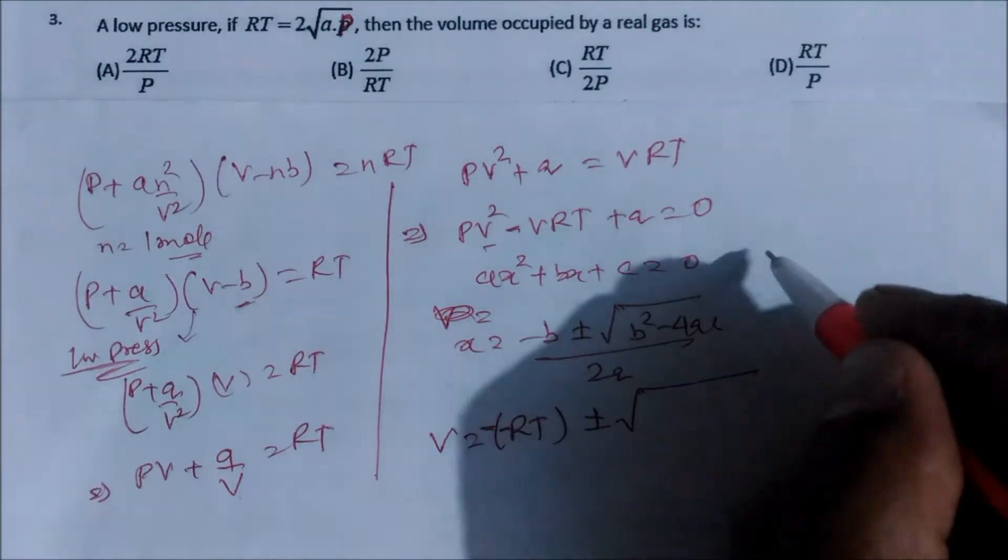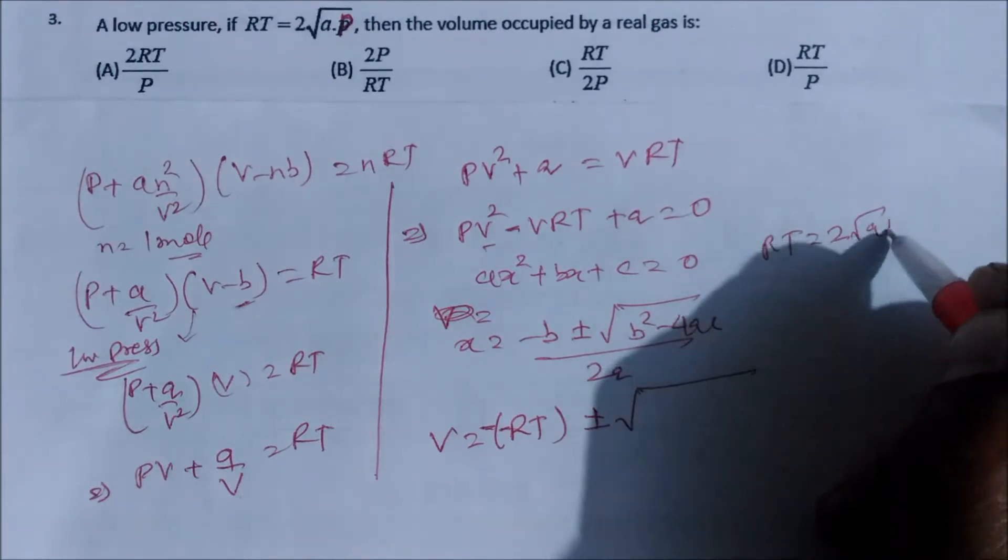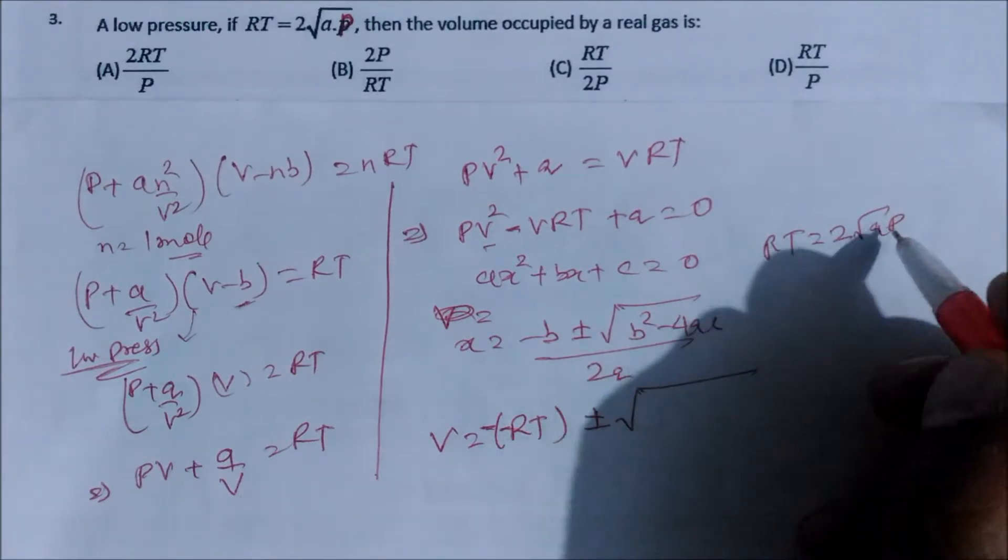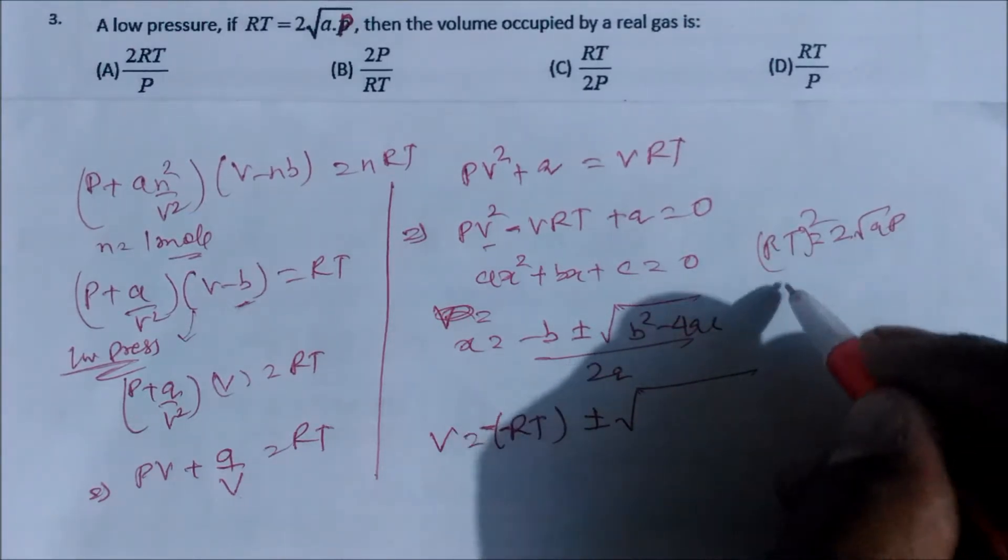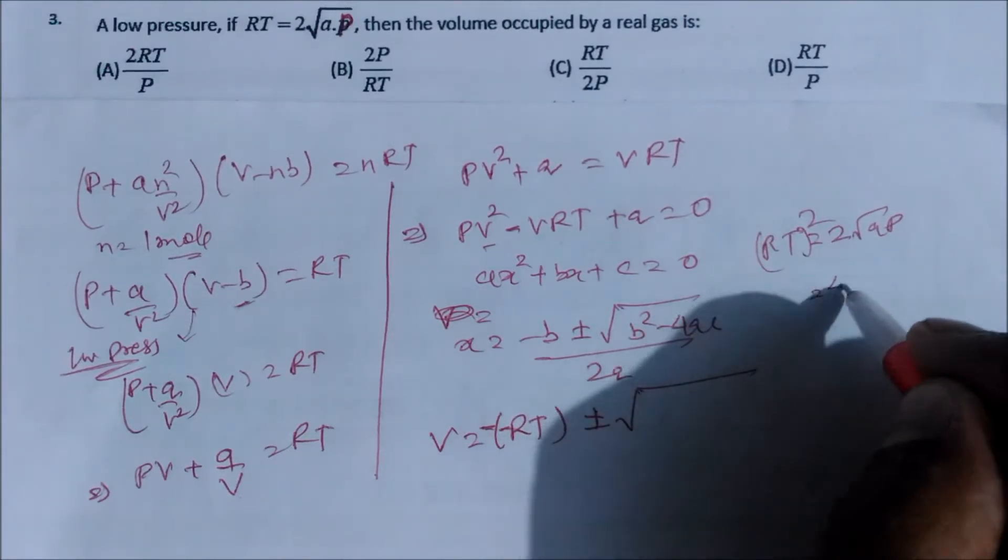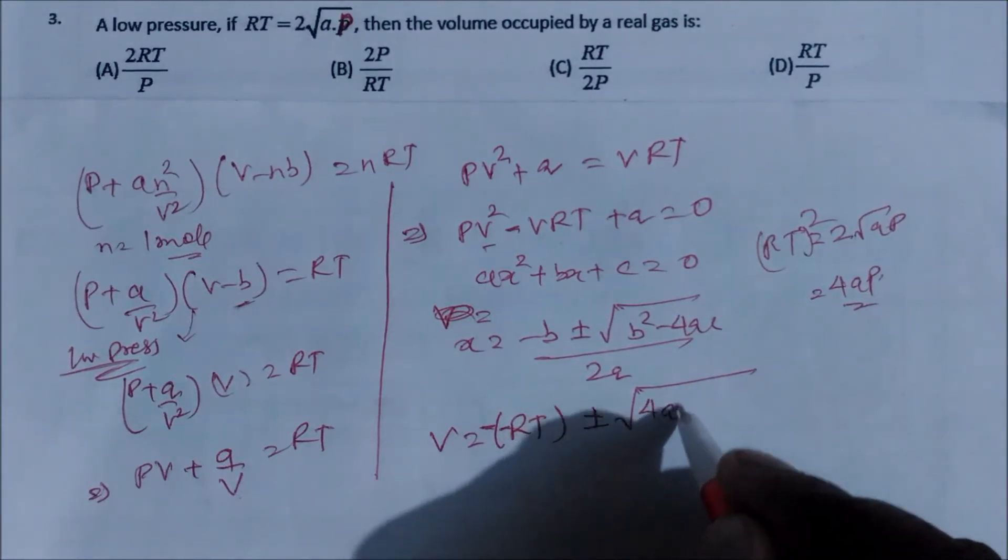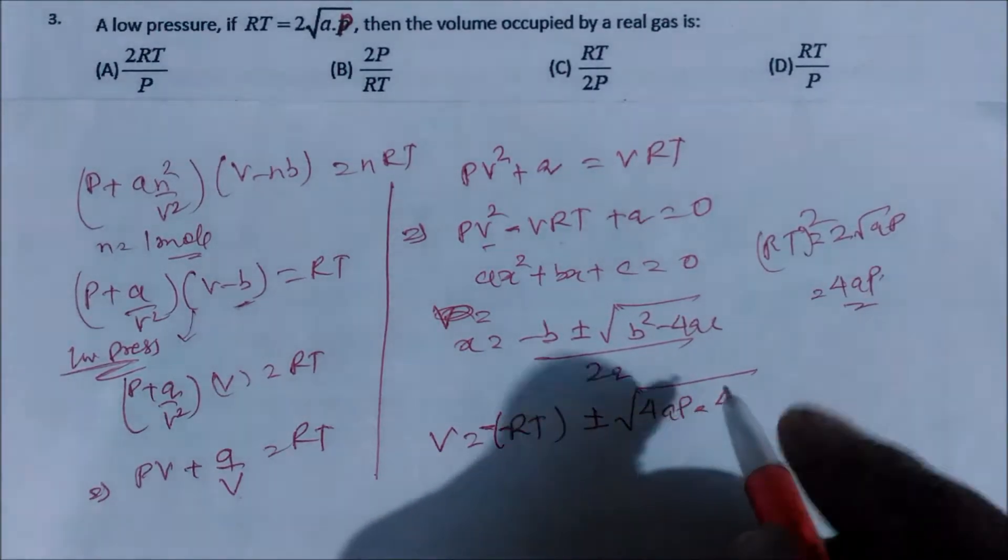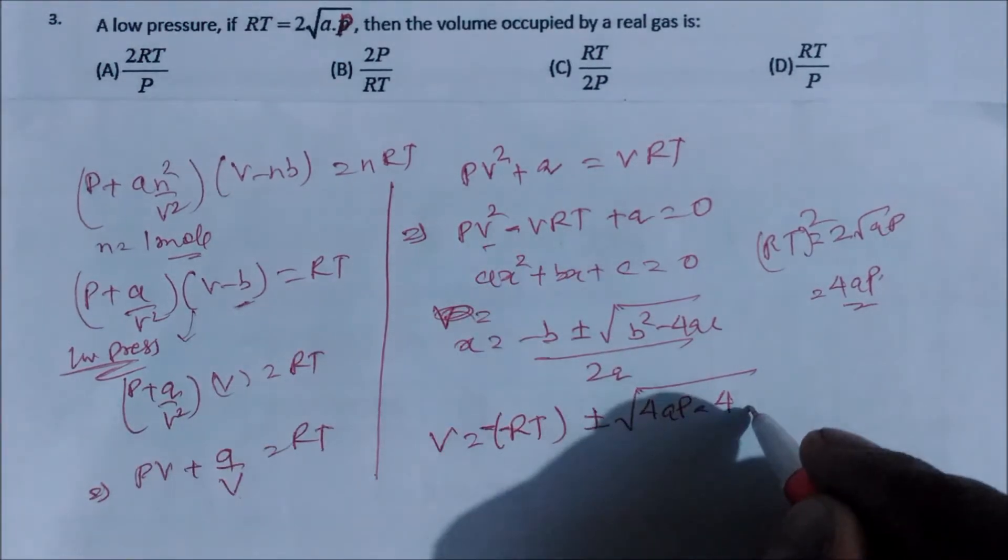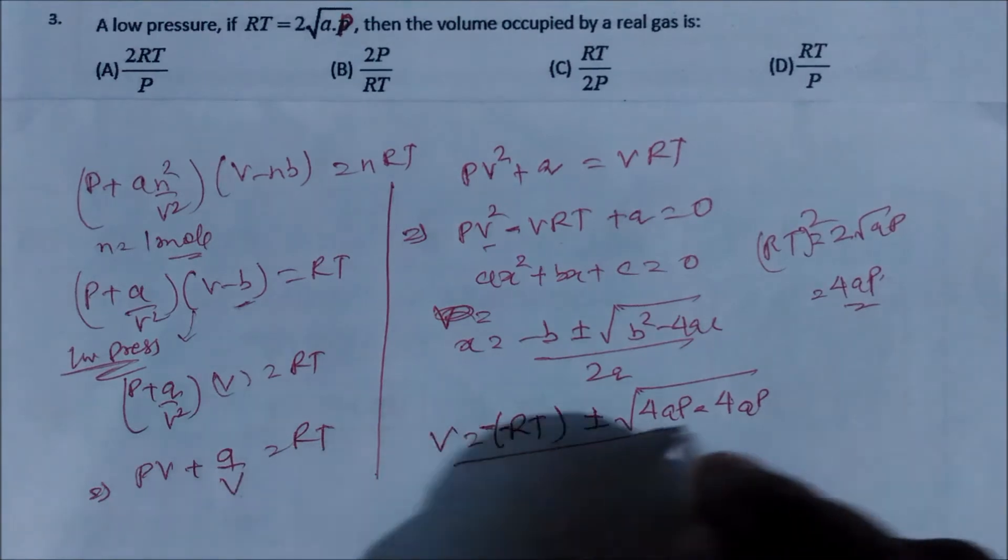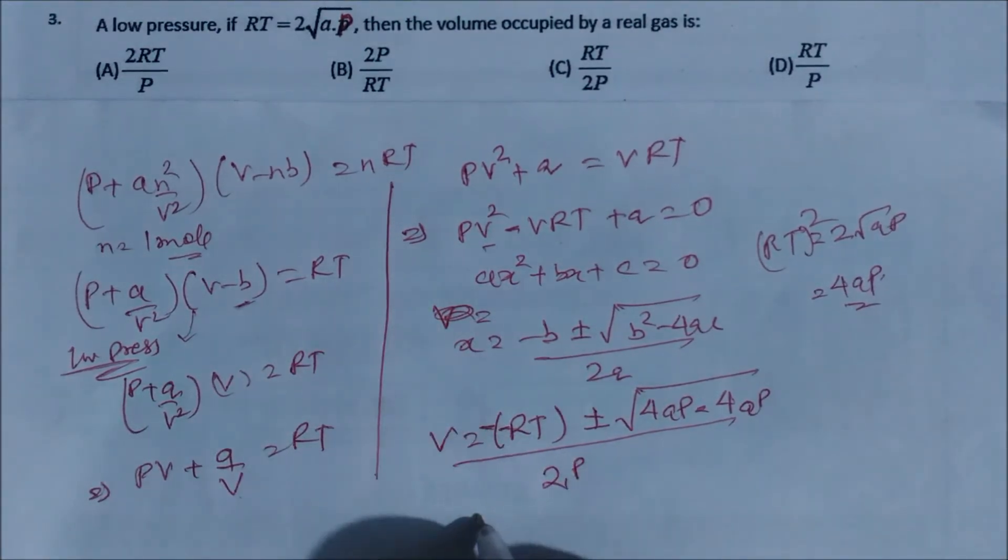So we can take if you take RT whole square, so this is nothing but the b, so it becomes your 4a into p. So we can write here 4a into p and minus 4. So what is a value? a is p, okay, and this is your a. So we can add a into p, and again divide by 2 into, although what is a is p, we can add here a.